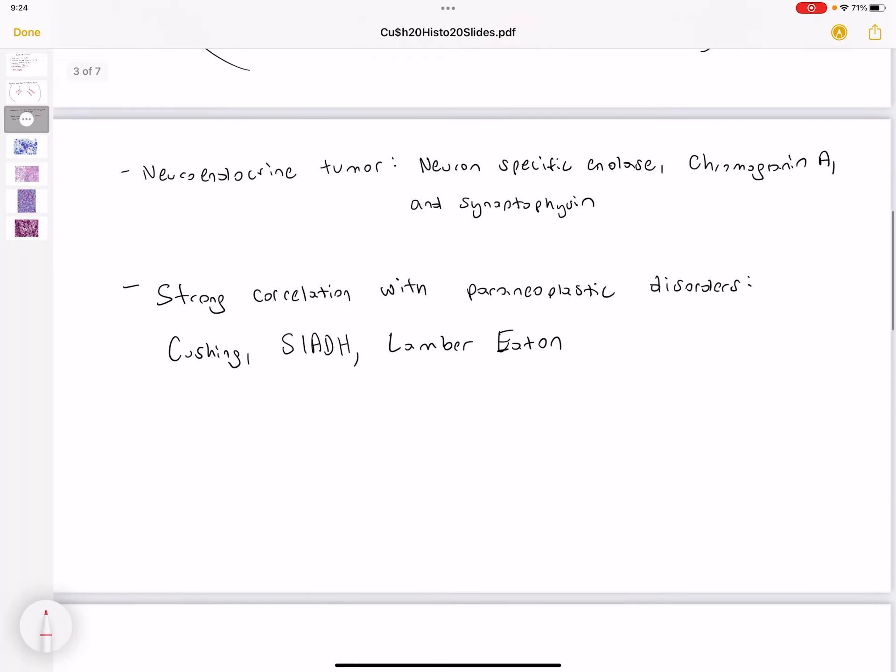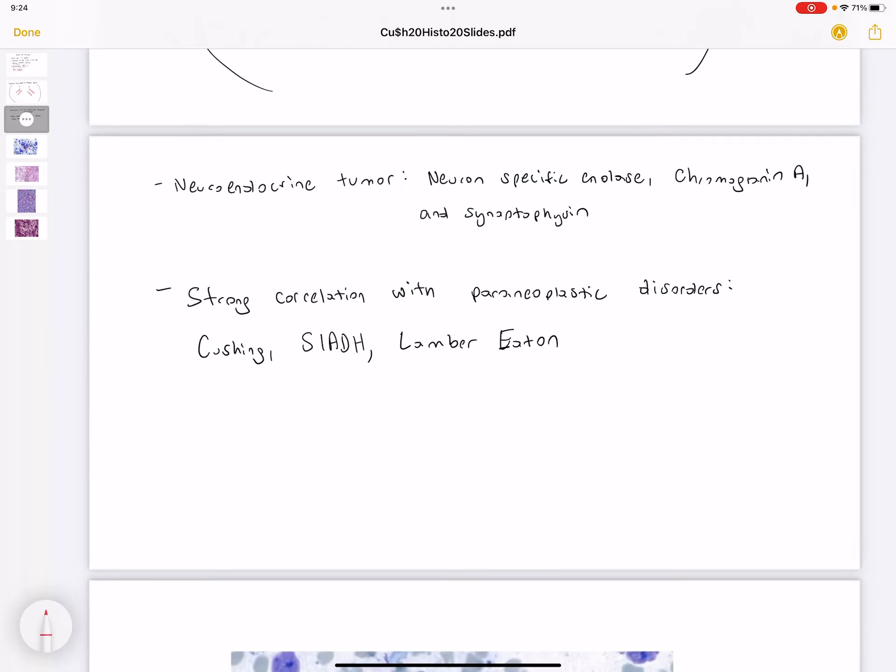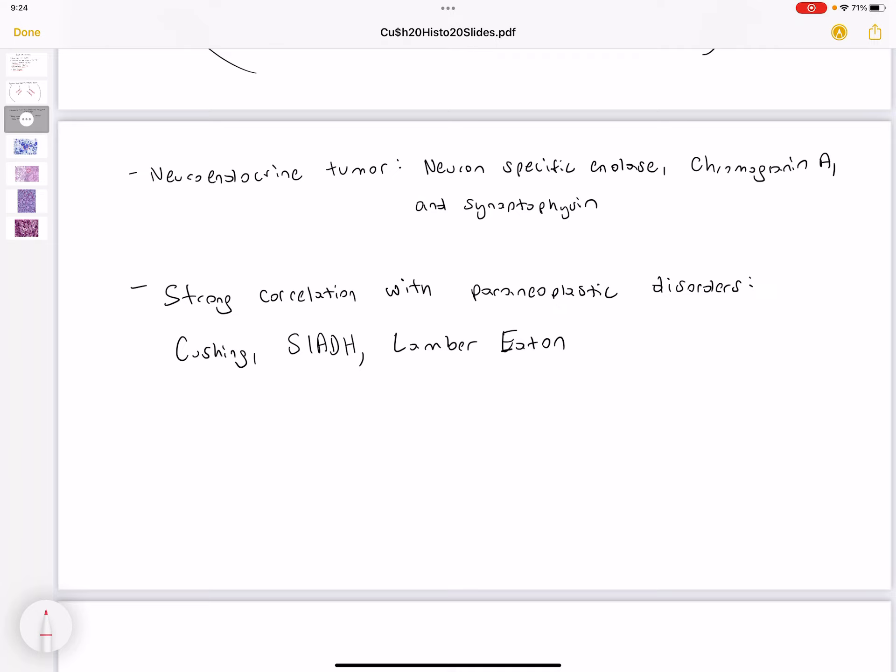Now, small cell carcinoma, because it is a neuroendocrine tumor, we're going to have positive findings of neuron specific enolase, chromogranin A, as well as synaptophysin. Because it is a neuroendocrine tumor, we're going to have a strong correlation with paraneoplastic disorders.